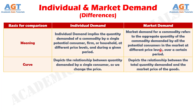Number 2: Both the individual demand curve and market demand curve have a negative slope — that is, from left to right — showing an indirect functional relationship between the price of the commodity and the quantity demanded. Other things being constant, an individual demand curve showcases the relationship between quantity demanded by a single consumer as we change the price. On the contrary, the market demand curve indicates the relationship between the total quantity demanded and the market price of the goods.